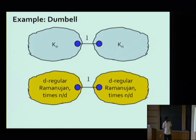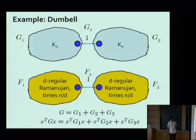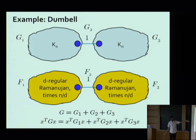The second example is a dumbbell graph, consisting of two copies of the complete graph joined by a single edge. I can approximate this by taking two copies of my d-regular Ramanujan graph with edge weights blown up by N over D, connected by a single edge. This works because the quadratic form is linear in the matrix, so the sum of sparsifiers is the sparsifier of the sums — I can approximate the left half by an expander, the right half by an expander, and keep the single edge. Key things to note: the weights of edges differ, and any sparsifier for this dumbbell must include the center edge.